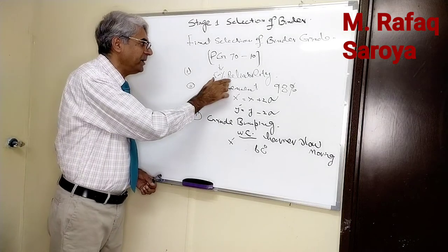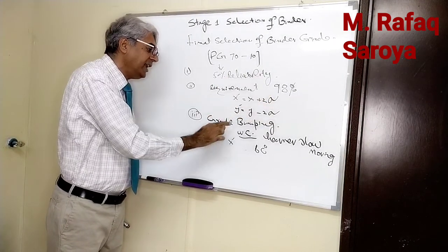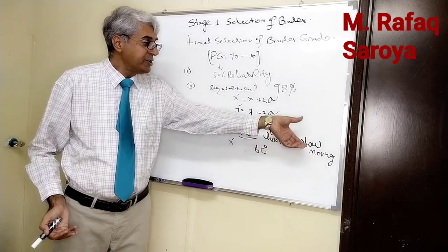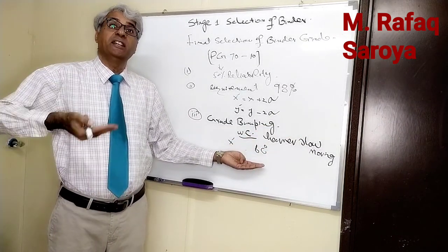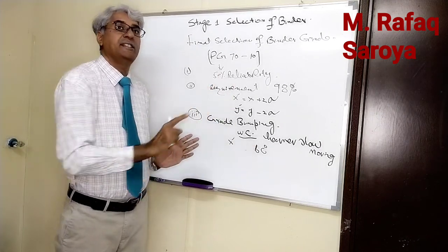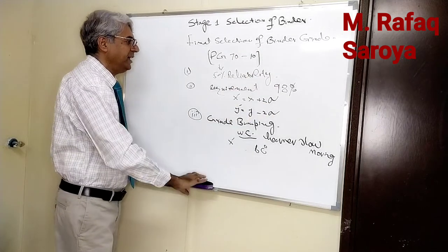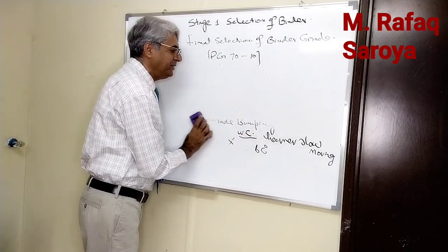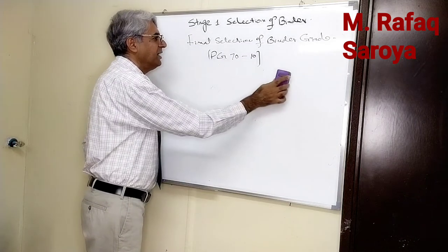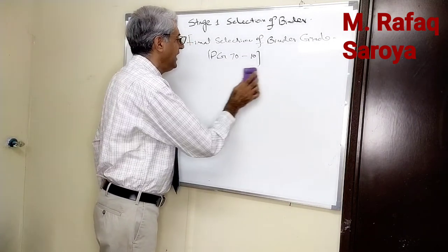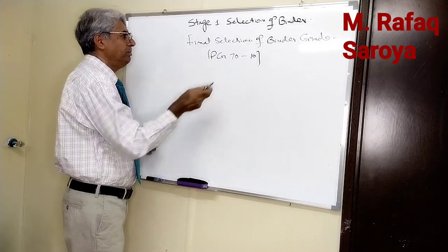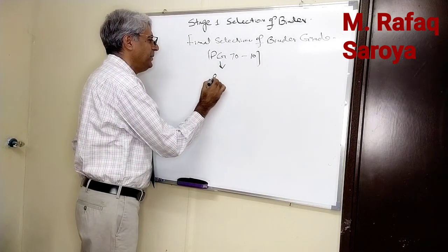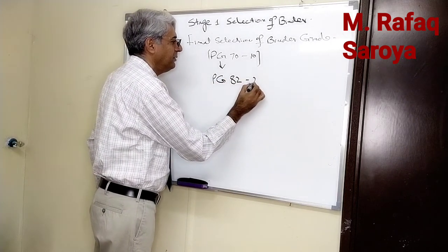This is the brief: 50% to 98%, and 98% means that our wearing course A is going to possess heavier traffic, slower moving, so then grade bumping is required. Grade bumping means we have to increase 6 Celsius. By keeping all these factors in consideration, my final accepted mix design is PG 82 negative 22.